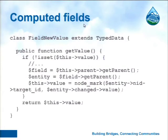This is the class referred to by the implementation — it calculates the value on the fly. When you access the value internally, it calls getValue(). If the value isn't already statically cached, it just computes the value on the fly and returns it.